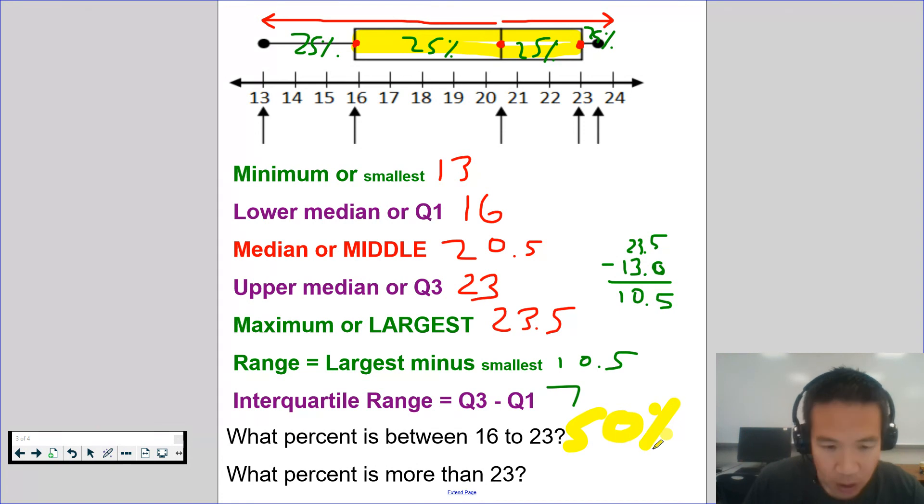And then what percent is more than 23? So what percent of data is more than 23? It's from here to here. That's 25%. And that is box plot with percents.